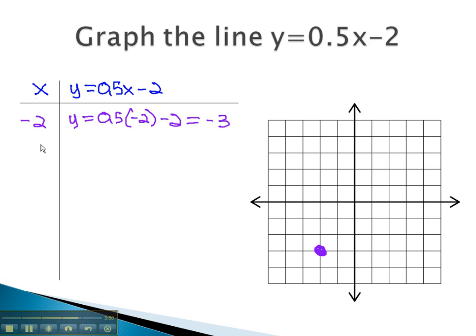Let's plug 0 into this equation. Now, the equation becomes y = 0.5 times 0, minus 2. Working this out, we get y = -2.